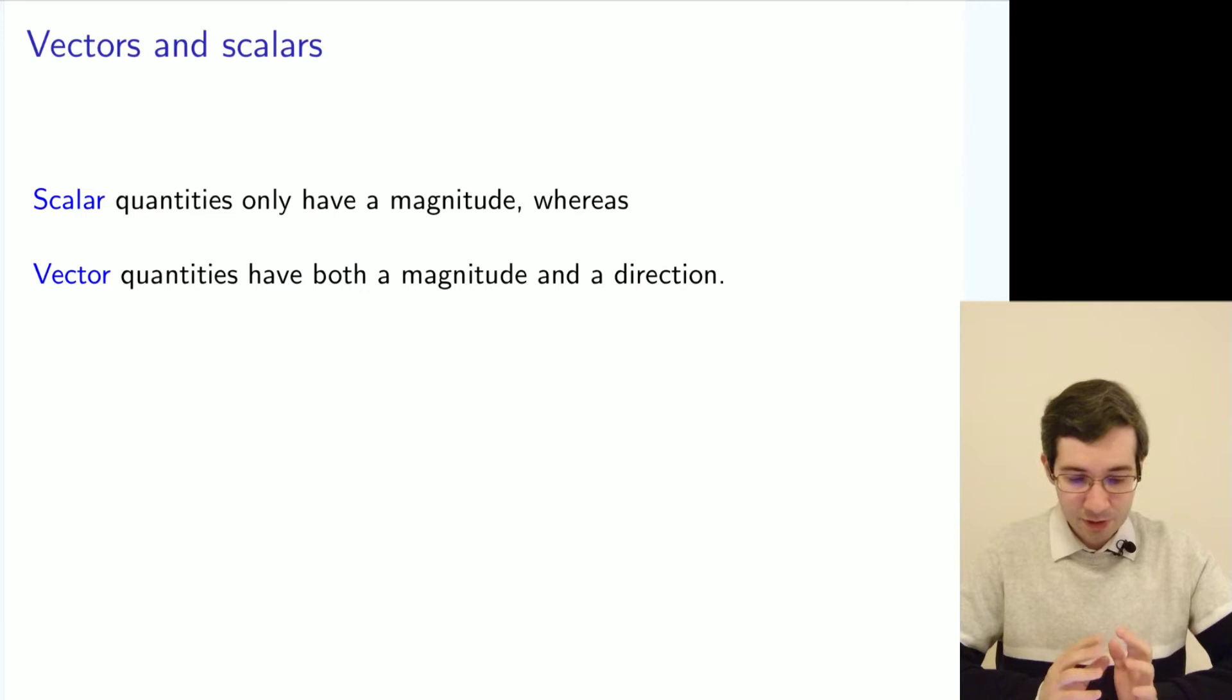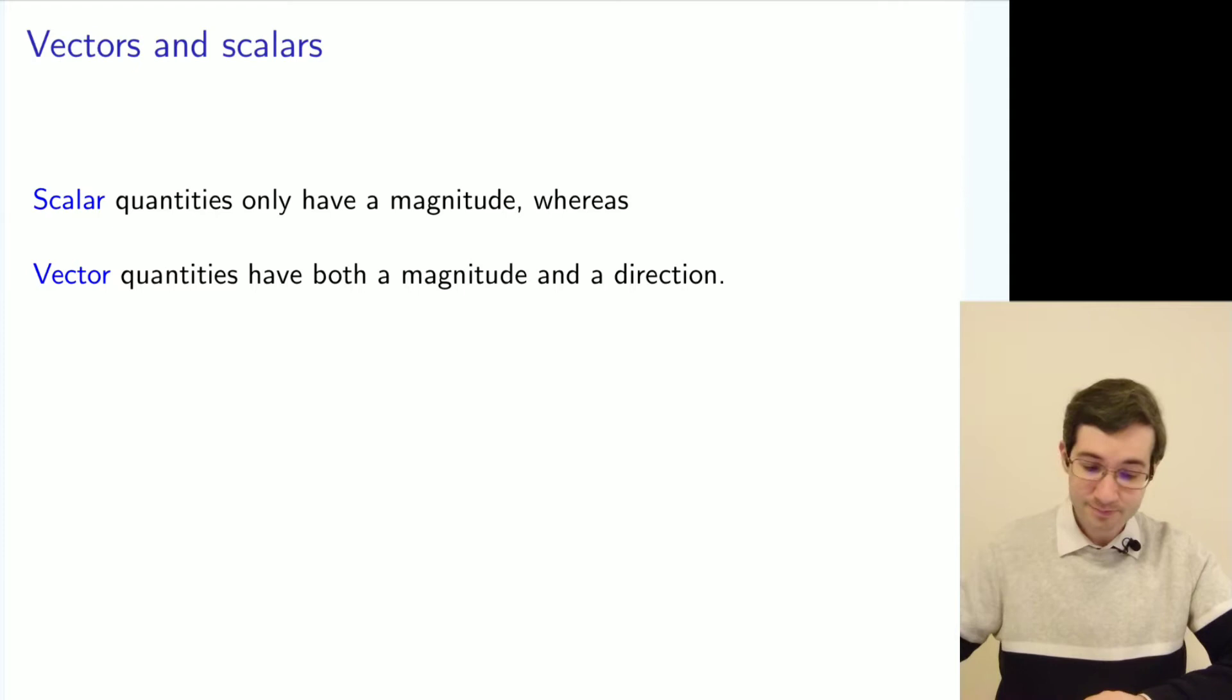We have normally two types of quantities: scalar quantities and vector quantities. Scalar quantities have only magnitude, while vector quantities have both magnitude and direction.